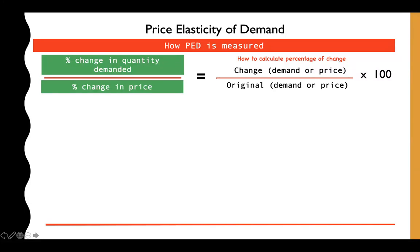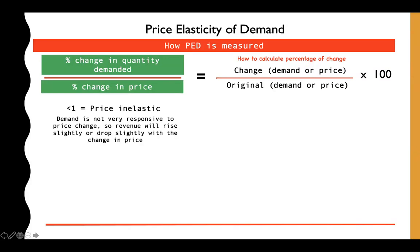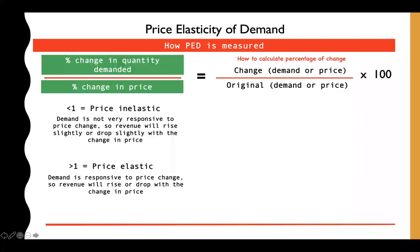To find the percentage change, you need the change versus the original. For quantity demanded, compare the original quantity to the new quantity. Likewise for price — compare the original price to the new price. We'll show you a calculation shortly to make this clearer. From this formula you will get two kinds of results.